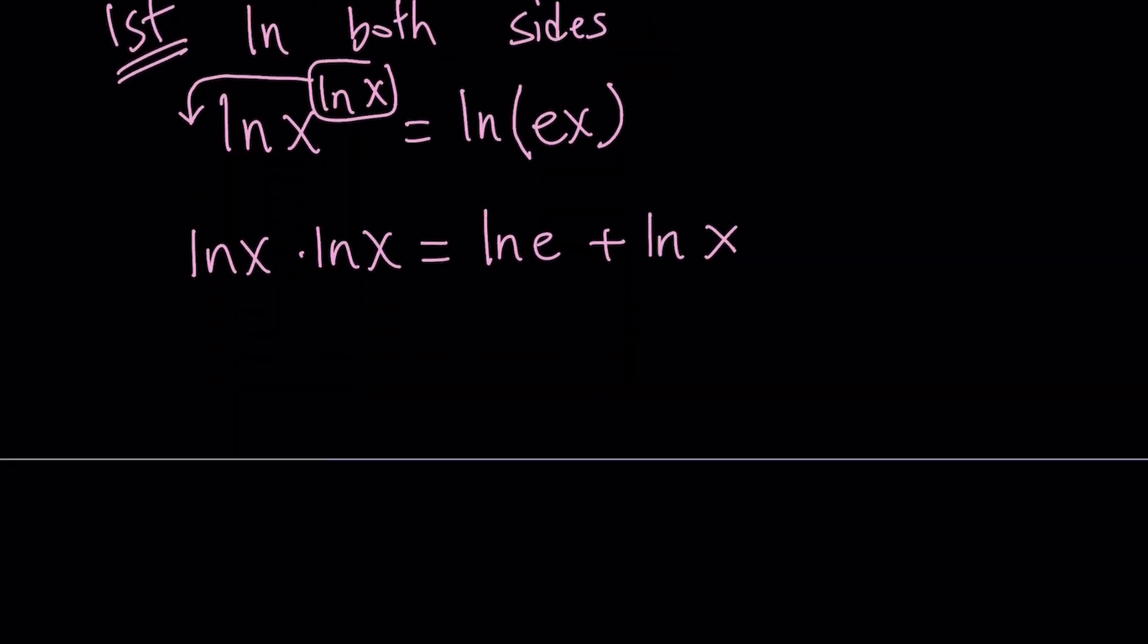Quick note, ln e is log e with base e, it's equal to 1. So this is equal to 1. And ln x multiplied by ln x is basically ln x squared.